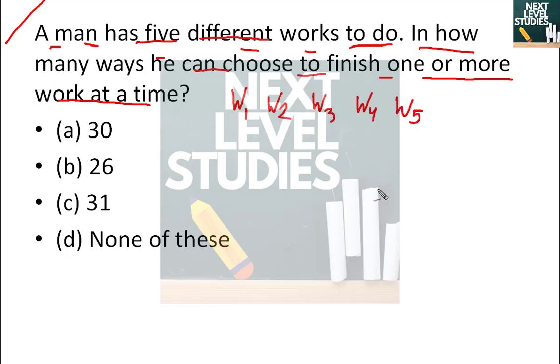So this question is how many ways he can choose to finish one or more work at a time. This question has options: one, or two, or three, or four, or five works.